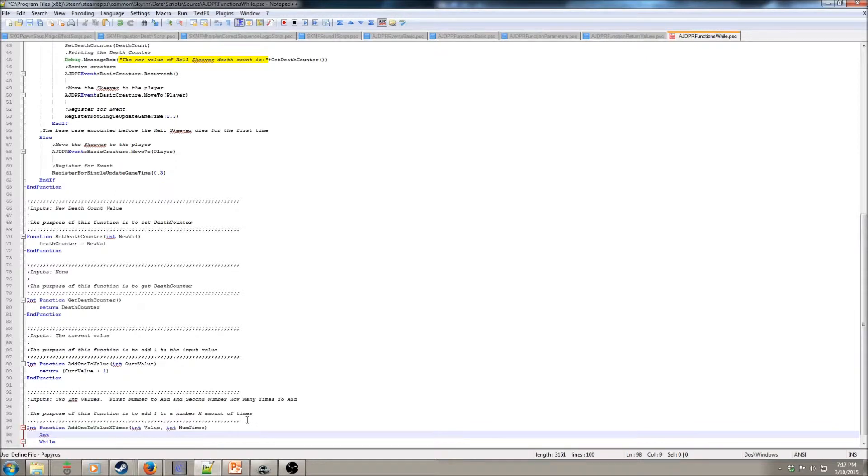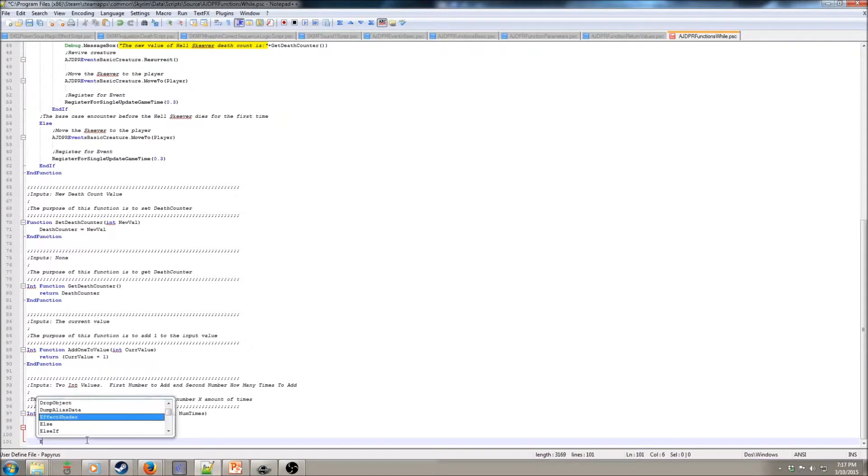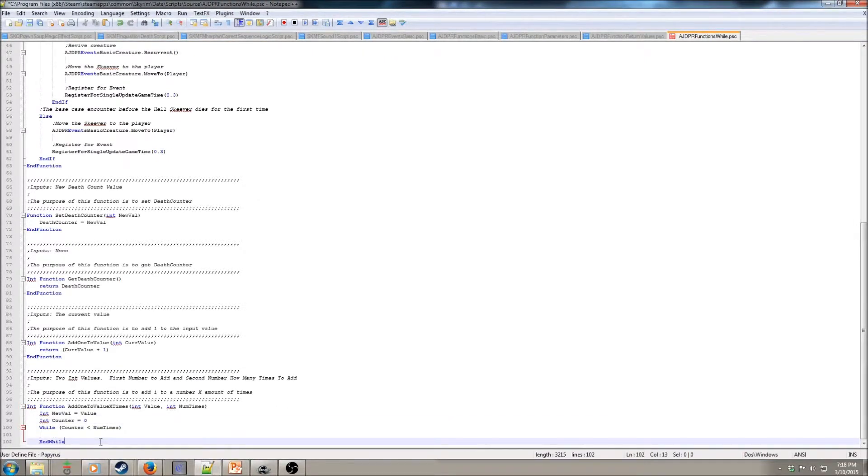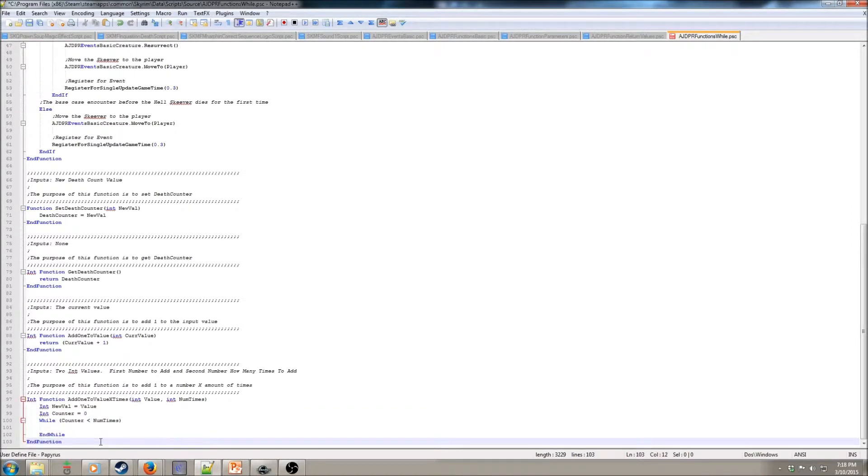Let's say the purpose of this function is to add one to a number x amount of times. Add one to value x times. Int value and then int num times. We want to keep consistent on our variables. So we're going to do a while block. Now let's do a temporary value eval, and we're going to have that equal to value. Let's just get that started. We're also going to have int counter, and that's going to equal to zero. While counter is less than the num times, because that's where we're going to do our logic.